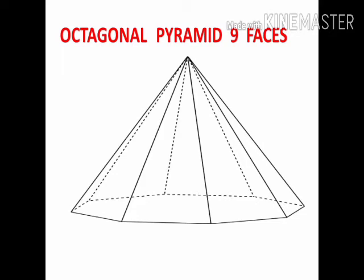Octagonal pyramid. Octagon means eight. Eight plus one, nine faces. So we can go for the shortcut.